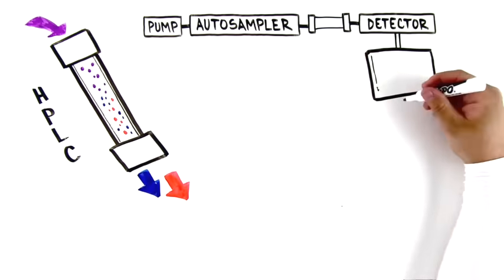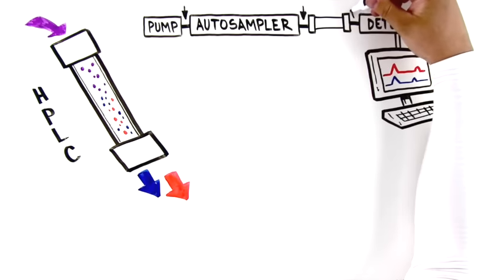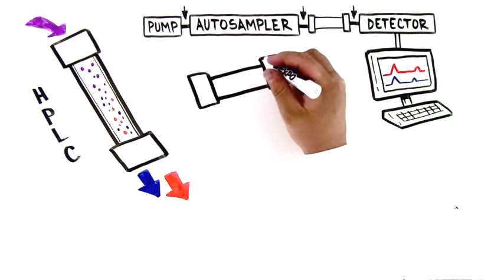the detector measures the compounds. All these different modules of an LC system need to be fluidically connected by some tubing.